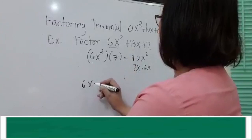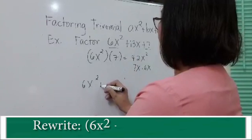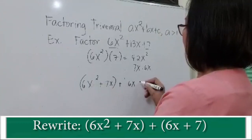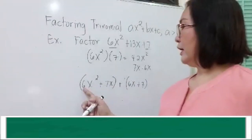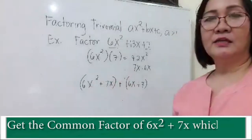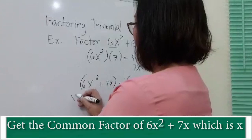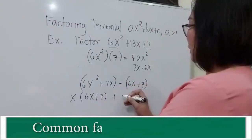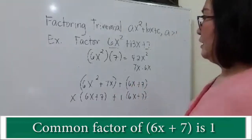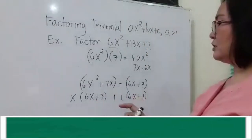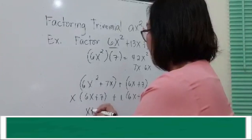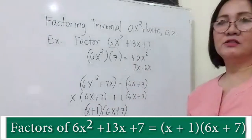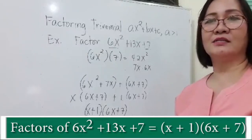We rewrite 6x² as 6x² + 7x + 6x + 7. Then we're going to get the common factor of 6x² and 7x, which is x, multiplied by (6x + 7). The common factor of 6x and 7 is 1, so you have (6x + 7). We have a common factor which is (6x + 7). Therefore, (x + 1)(6x + 7) are the factors of the given trinomial 6x² + 13x + 7.